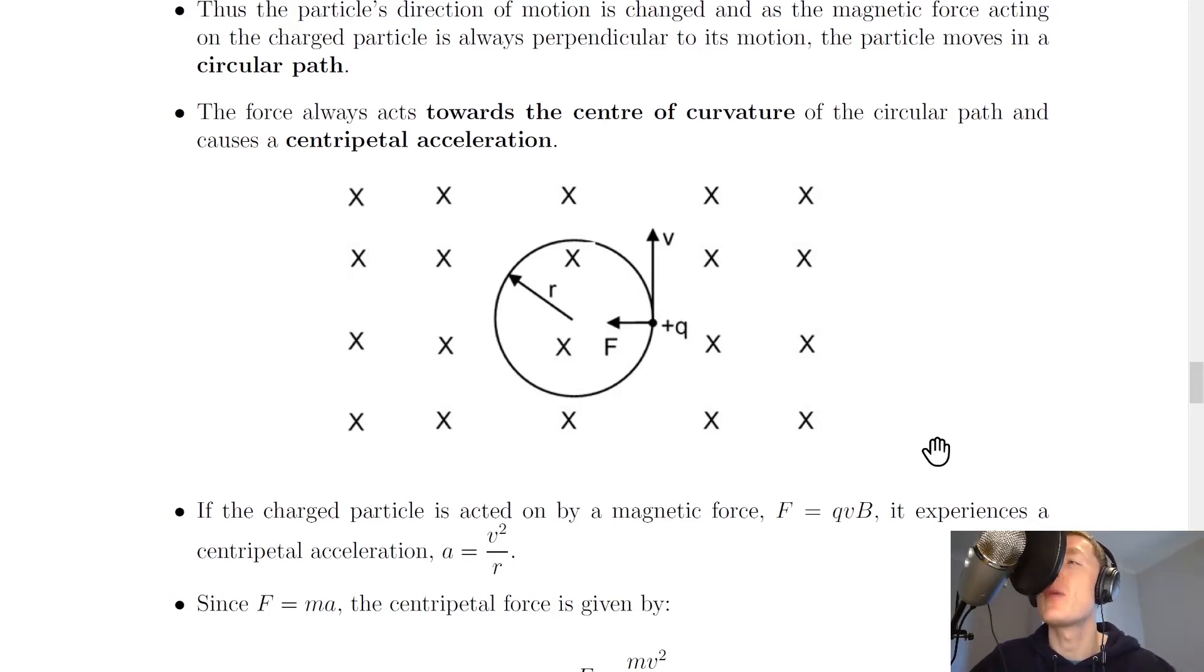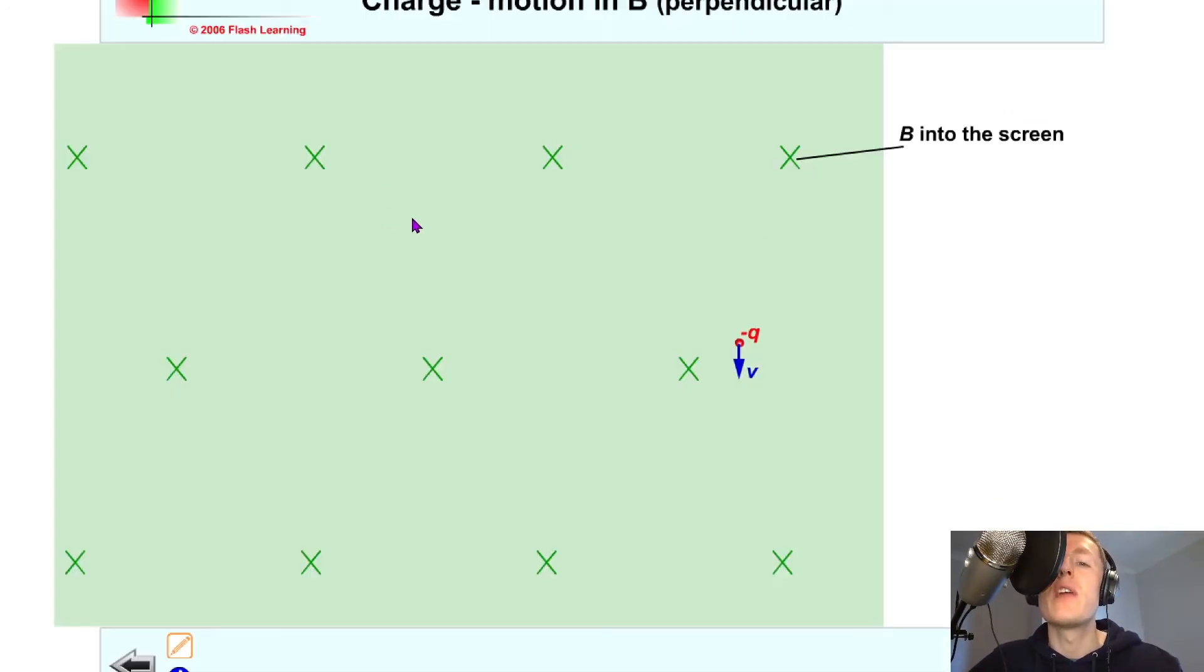Just to show you a quick simulation to help you understand this. Let's say I've got a relatively small magnetic field pointing in towards the page, or in towards the screen in this case. Let's say I've got a negative charge this time, like an electron, and we've got the velocity vector direction labelled on our charge as well. If I click play here,